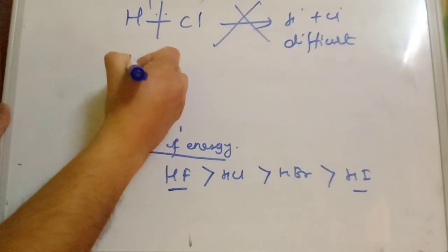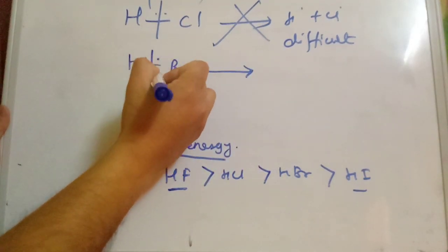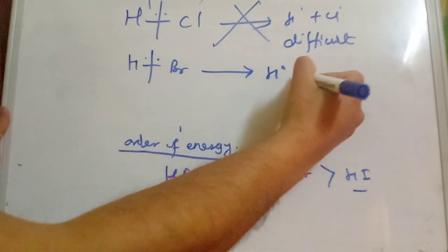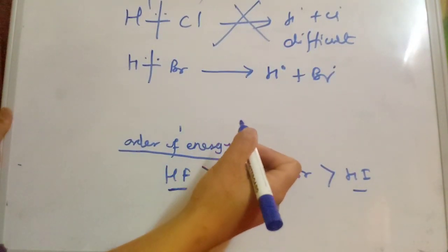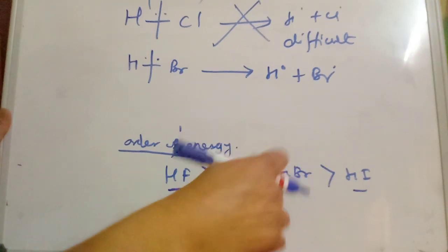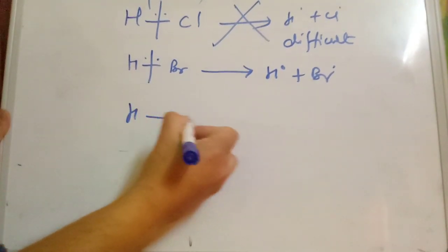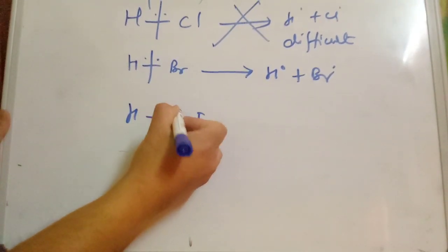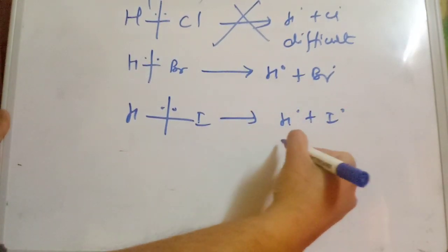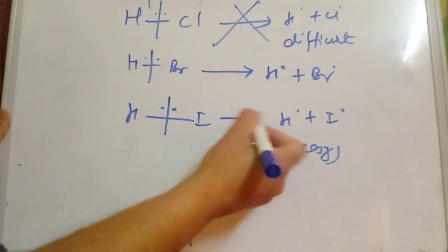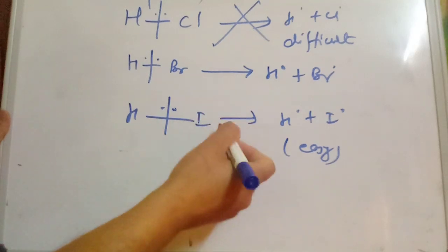In the case of HBr, homolytic bond dissociation is feasible. The bond dissociation energy is moderate, so the reaction can proceed. We can see that the same reactions are possible in HBr.